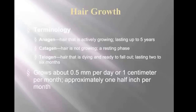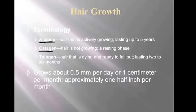Hair growth has three phases: anagen, catagen, and telogen. Anagen is hair that is actively growing — this can last up to five years. Catagen is hair that's not growing; it's in a resting phase — think of peach fuzz. Anagen phase includes things like a man's beard and leg hair. Then telogen is hair that's dying or about to fall out, lasting two to six months. Hair grows approximately 0.5 millimeters per day, or one centimeter per month — though this varies by individual.